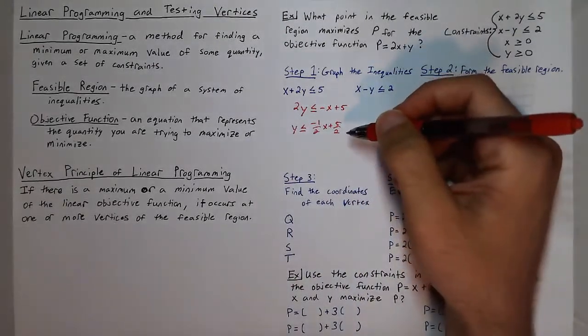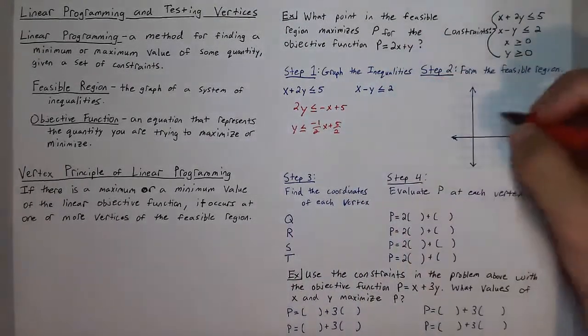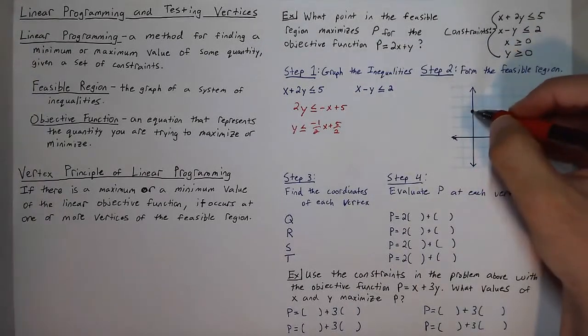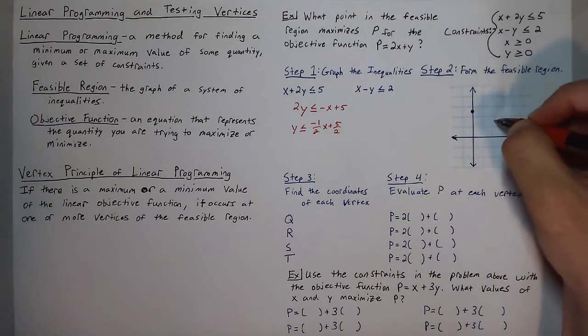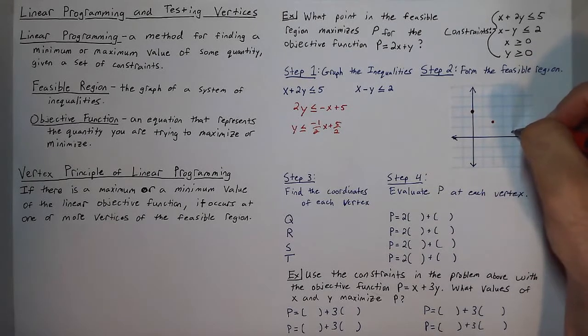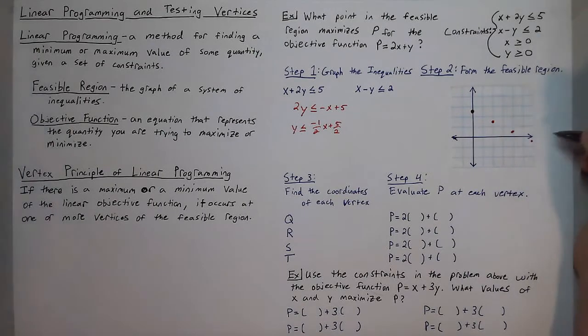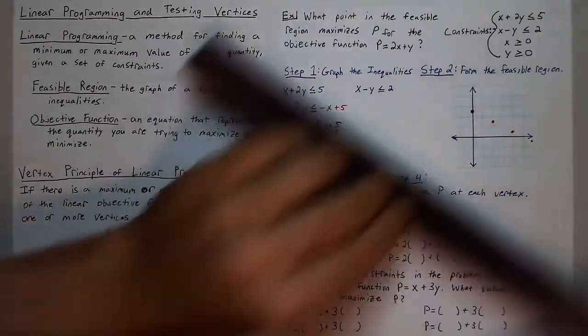So that gives us a y intercept of 5 halves, which is about 2.5, and a slope of negative 1 half, which means down 1 to the right 2, down 1 to the right 2, down 1 to the right 2, and we get a little bit off my grid there.